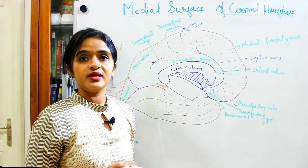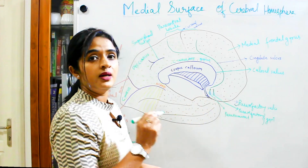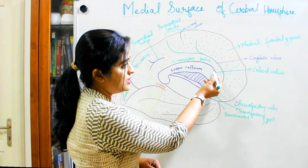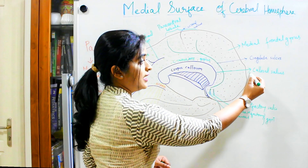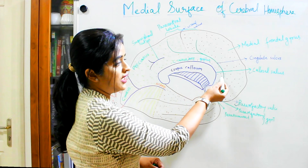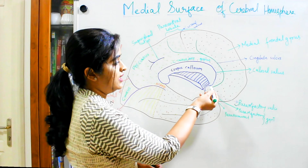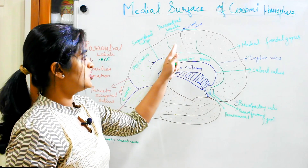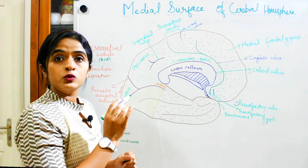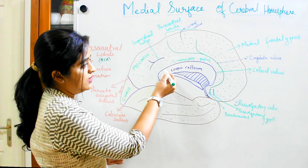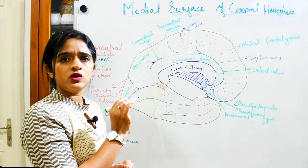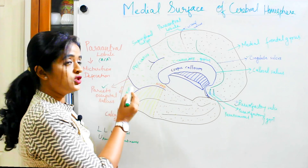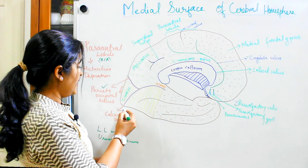Starting from the anterior aspect, you have the para-olfactory sulci — the anterior and the posterior para-olfactory sulci. After that you can see the callosal sulcus: just above the corpus callosum there is a depression known as the callosal sulcus. Roughly one centimeter above it and parallel to it is another sulcus known as the cingulate sulcus. Coming to the posterior aspect, you can see the suprasplenial sulcus — lying just above the splenium of the corpus callosum. Supra means above, hence suprasplenial sulcus.